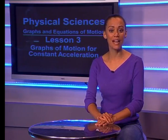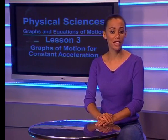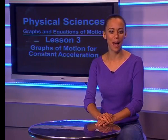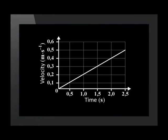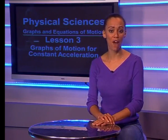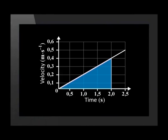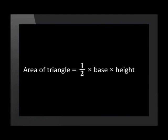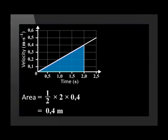Next, we know that area under a velocity-time graph gives us displacement. Let us confirm that by the calculation of displacement after 2 seconds using the velocity versus time graph. We can see that at 2 seconds, the velocity of the trolley is 0.4 meters per second. Using our knowledge that the area under a velocity versus time graph gives us the displacement, we can work out the trolley's displacement at 2 seconds. The shape of the area under the graph is a triangle. The equation for the area of a triangle is equal to half base times the height. So, the area equals a half multiplied by 2 multiplied by 0.4, which gives us a displacement of 0.4 meters.